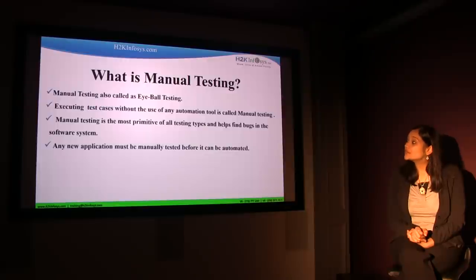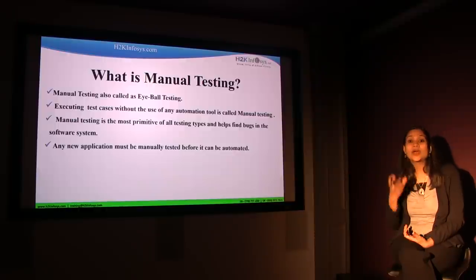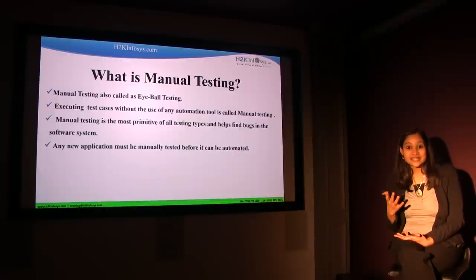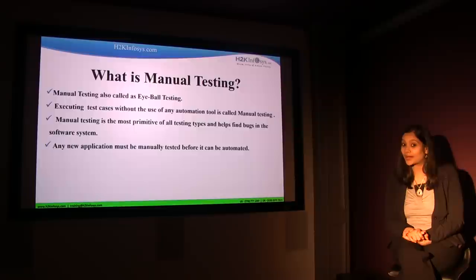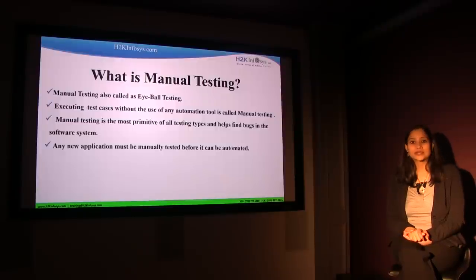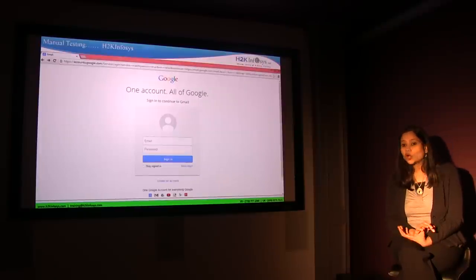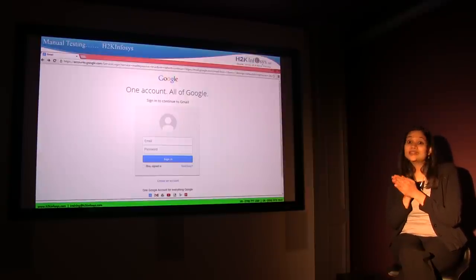Manual testing is also called eyeball testing. The reason why it's called eyeball testing is because we basically look at something physically and see whether it's working or not according to the requirements. That's why it's called eyeball testing. Executing test cases without the use of any automation tool is called manual testing — you are physically going to check whether the application is working the way it is supposed to work.